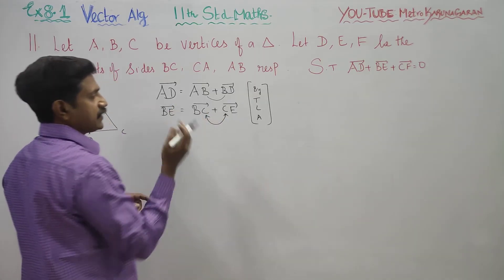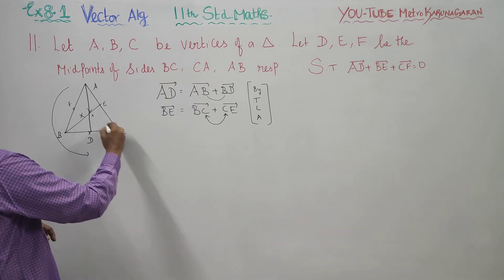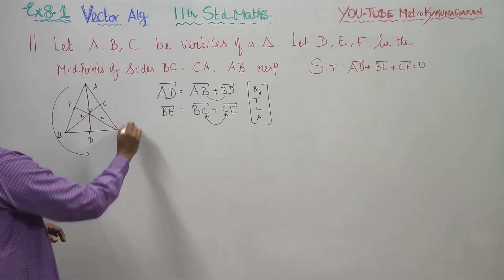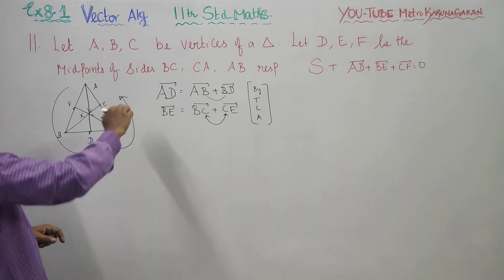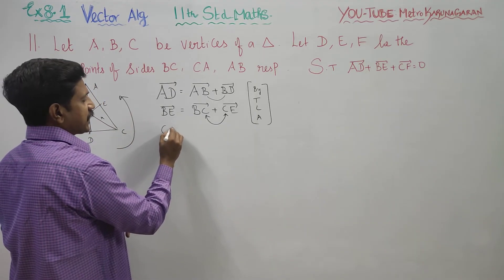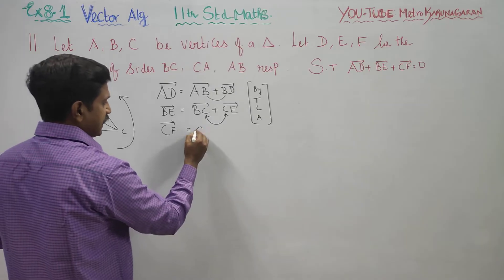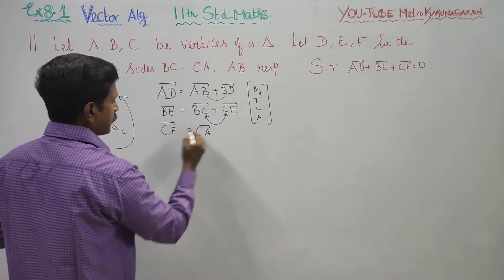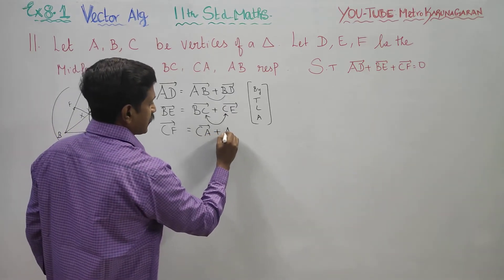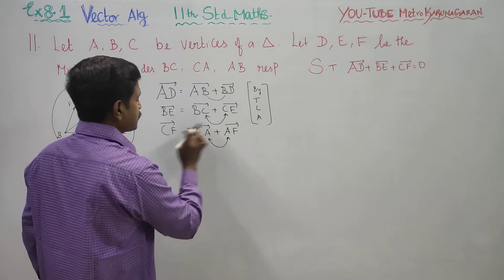For the CF vector, using the Triangle Law of Addition: CF equals CA plus AF.